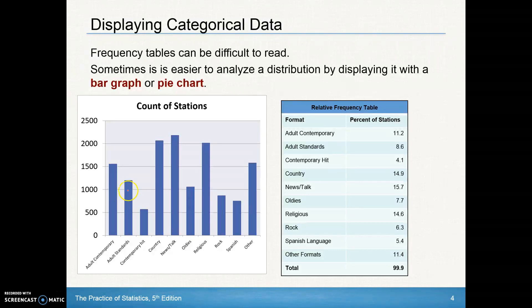In fact, the adult standards compared to the adult contemporary, if you just cut it off at 1,000, it would look like this bar would be twice as much as this one. But it's really not if we started at zero. So make sure on these bar graphs that the y-axis starts at zero to avoid deception.